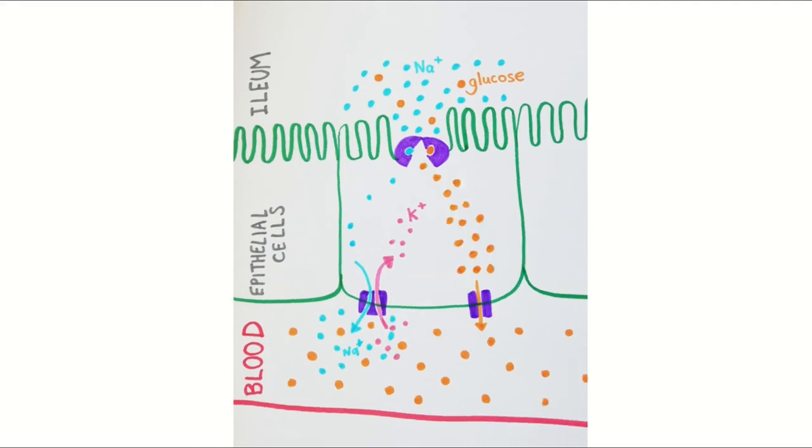Finally, now that we've moved all that glucose into the cell by co-transport, it can now travel down its concentration gradient into the blood, through channel proteins that are found only on the lower side of the cell. So this part of the process is facilitated diffusion. This whole process ultimately allows glucose to travel from a higher concentration in the ileum to a lower concentration in the blood.